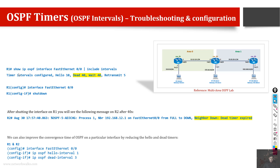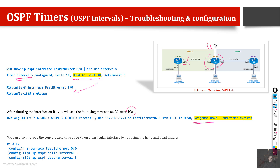You can check the neighbor timers using the command 'show ip ospf interface | include intervals' — the pipe command filters the output to show only the intervals line, avoiding a very long output. You can see the dead timer is 40 and the wait timer is 40 as well. If you shut down the interface on one router, R2 will not report the neighbor as down immediately — it will wait 40 seconds without receiving a hello, then declare R1 down and remove all routes received from R1 from its routing table.